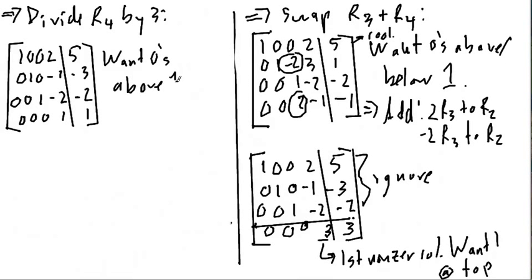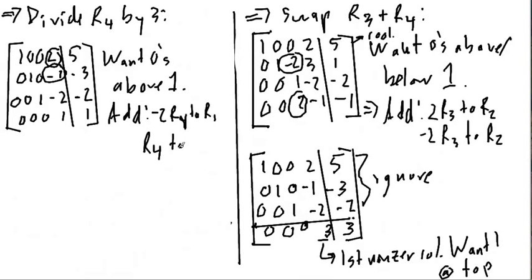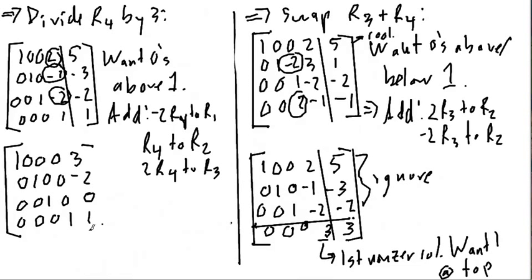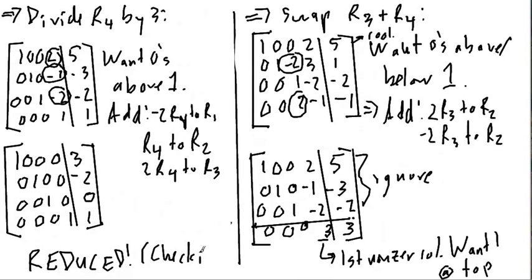Now I want zeros above this 1 that I just put there. To get rid of the 2 in row 1, I'll add negative 2 times row 4 to row 1. I'm going to add row 4 to row 2 because 1 plus negative 1 is 0. I'm going to add 2 times row 4 to row 3 because the negative of negative 2 is 2. To the left of the bar, I'll just have 1s and 0s — 1s going down the main diagonal and 0s everywhere else, because that's what this Gaussian elimination algorithm does for us. Now we're left with this matrix — I'd like you to spend a moment to check that this is indeed reduced.